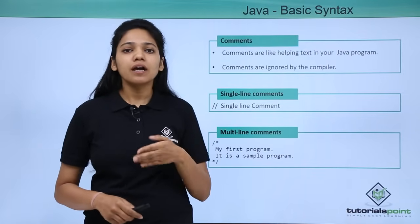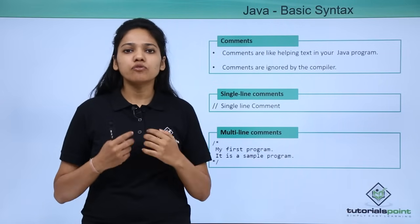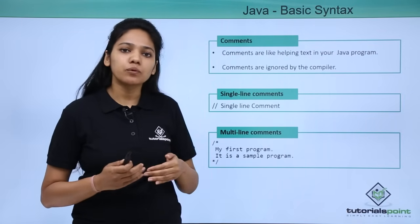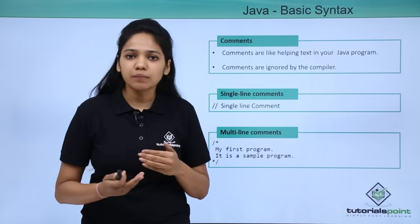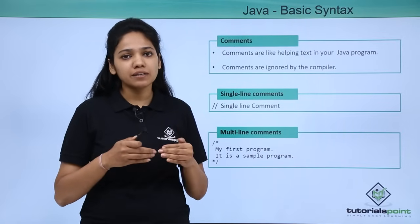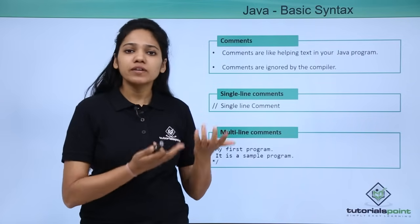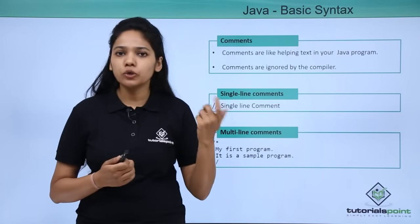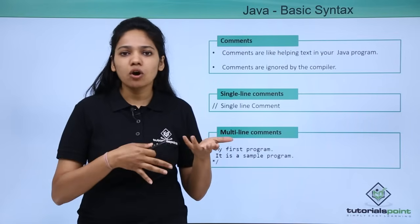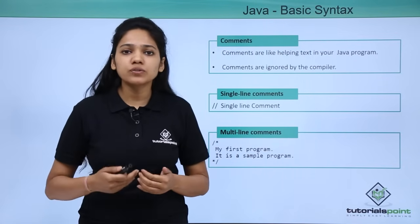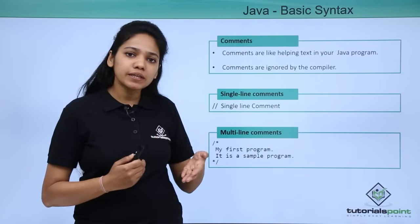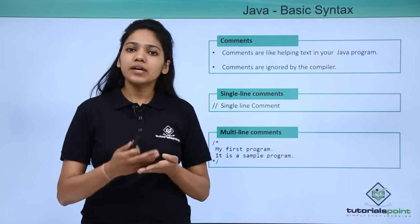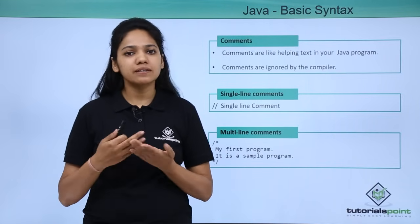The next topic is comments. Comments are written in a program for better understanding — they provide explanatory information about what the program does, why variables were created, or what a method does. In our human example, we can explain the purpose of the program with comments. These comments are ignored by the compiler. You can write comments in a single line or in a multi-line format.